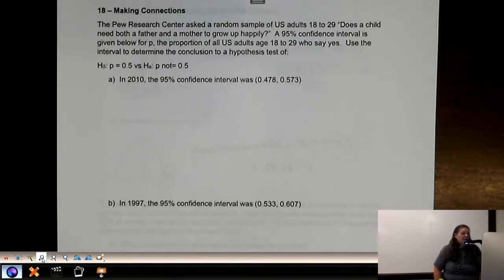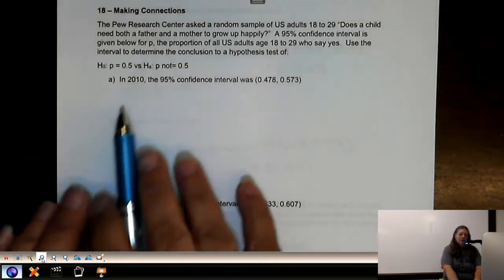We want to use the interval to determine the conclusion to our hypothesis test. Our null hypothesis is that P equals 0.5, and the alternative is that it's not equal to 0.5.